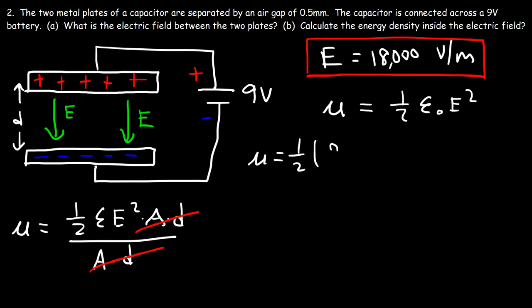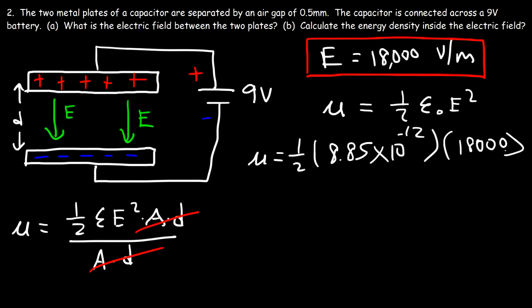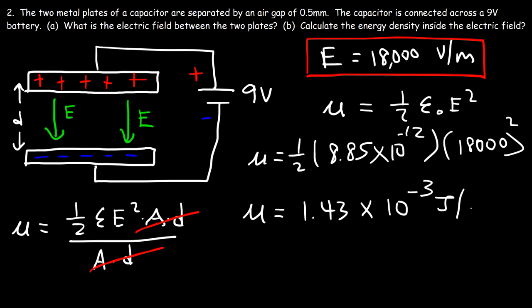Applying this formula: energy density equals one-half times 8.85 times 10 to the minus 12, times the electric field of 18,000 volts per meter squared. This gives an energy density of 1.43 times 10 to the negative 3 joules per cubic meter. That's the answer for this problem.